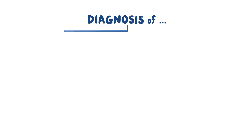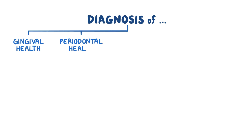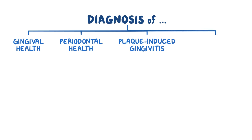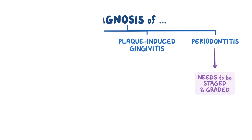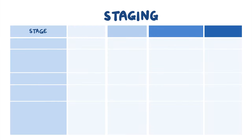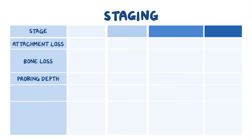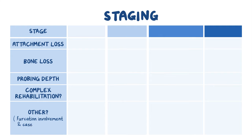Once the periodontal examination is completed, a diagnosis of gingival health, periodontal health, plaque-induced gingivitis, and periodontitis can be determined. If the diagnosis is periodontitis, it needs to be staged and graded. Staging classifies the severity and extent of the disease based on clinical attachment loss, amount of bone loss, tooth loss due to periodontitis, probing depth, nature of bone loss, furcation involvement, and case complexity.